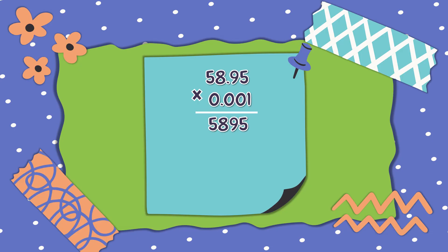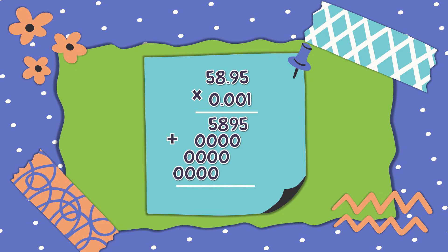The rest will become 0 — 0, 0, 0. Now let's add. The answer is... the same number: 5,895.